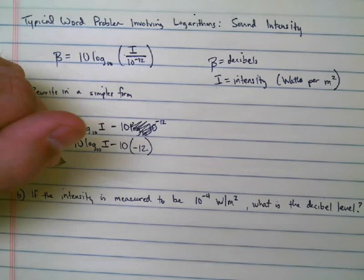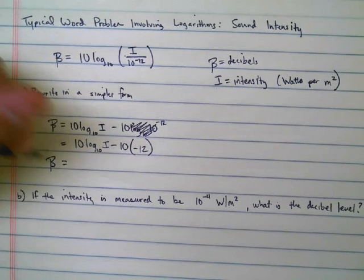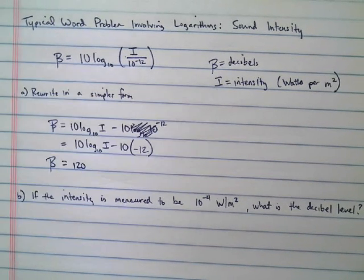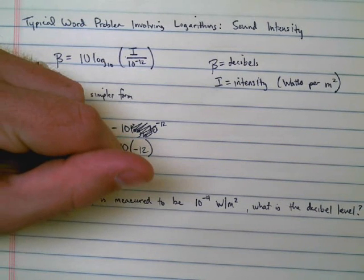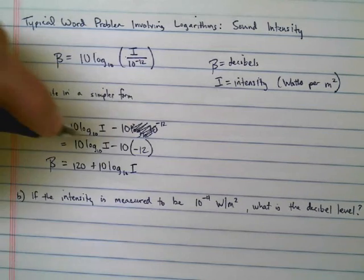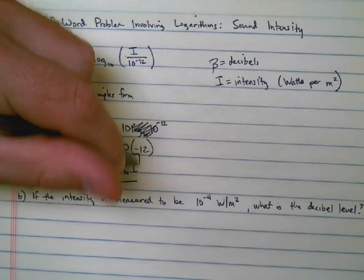I drop the log base 10 of 10. And so now, this becomes a little bit simpler because negative 10 times the negative 12 is equal to 120. So I can rewrite this equation as beta is equal to 120 plus 10 log base 10 of I. That's a much simpler equation to work with.